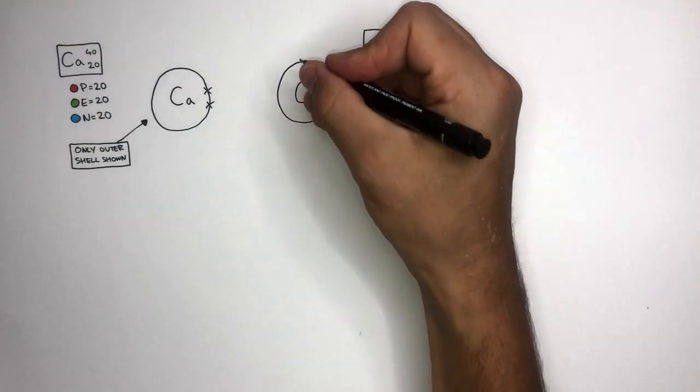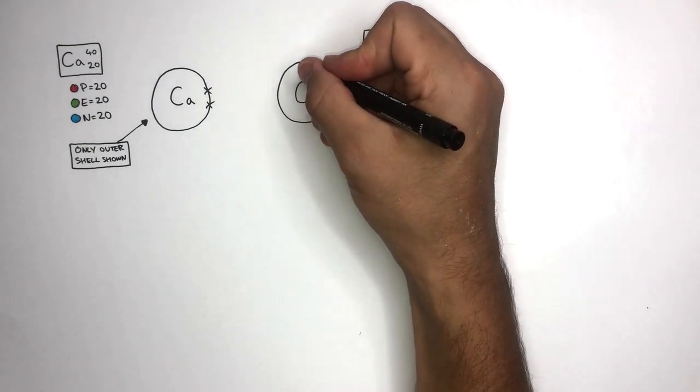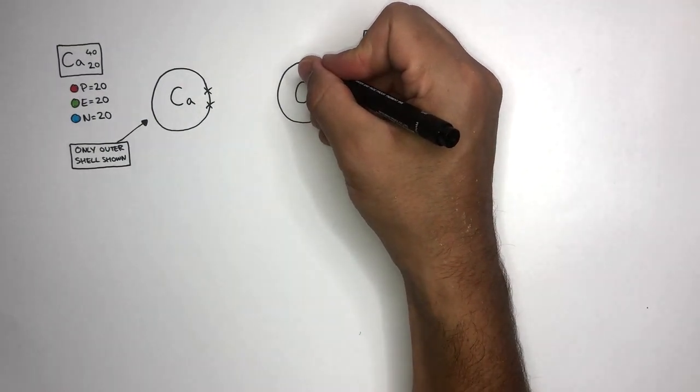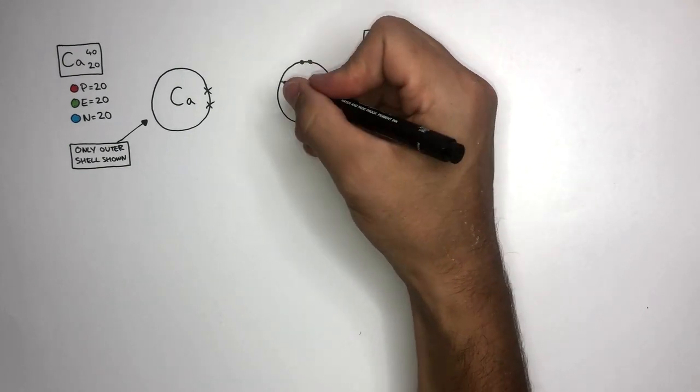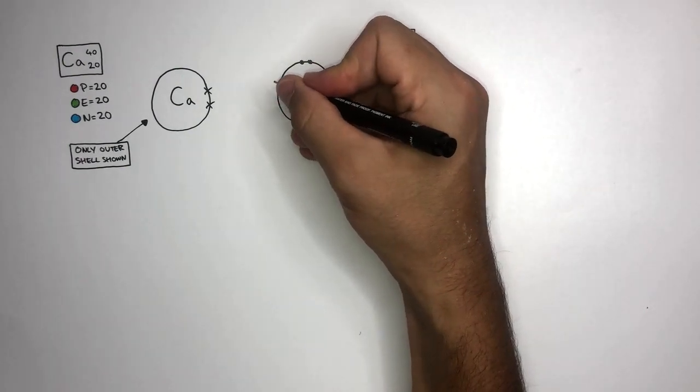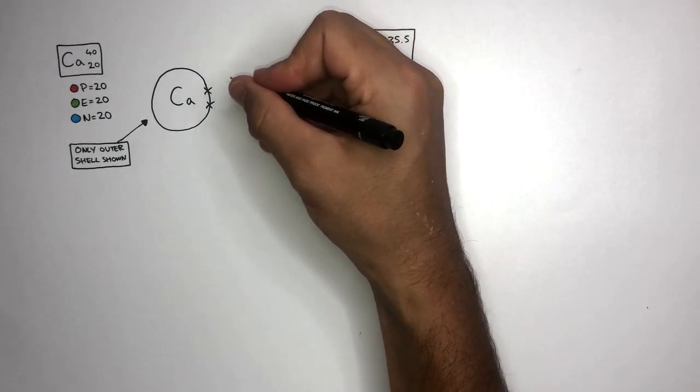Drawing the outer shell electrons only, Chlorine is in group 7. Therefore, it has only 7 electrons in its outer shell. Neither atom is stable, as neither atom has a full outer shell of electrons.